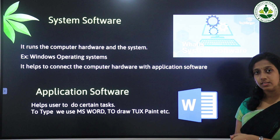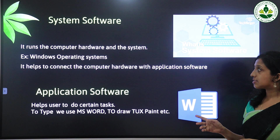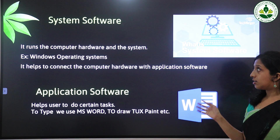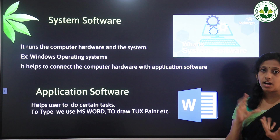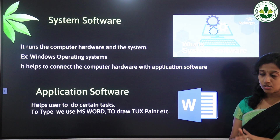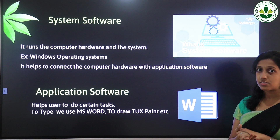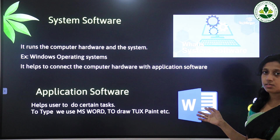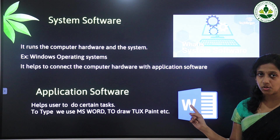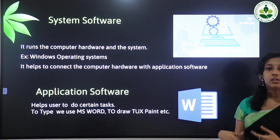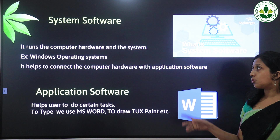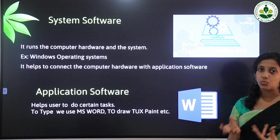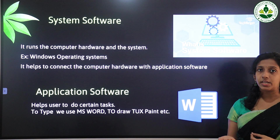The first type is system software. System software runs the computer hardware and the system — it connects the computer hardware to the application software. An example of system software is the Windows operating system. Without system software, the computer will not work. It helps the computer connect between the hardware and the application software.